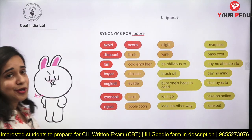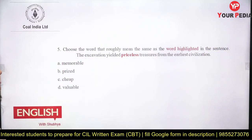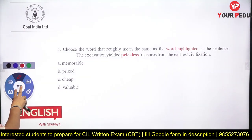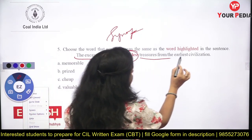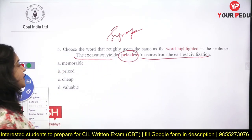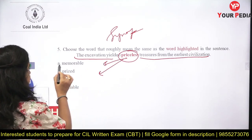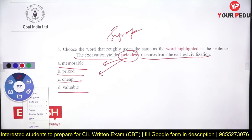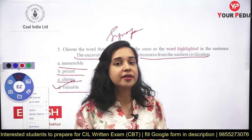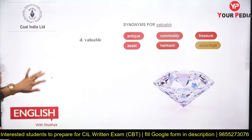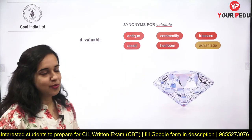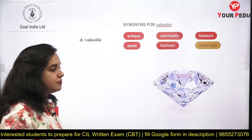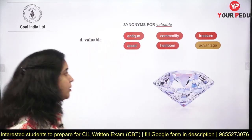The fifth question is another synonym question. The sentence is: 'The expression yielded priceless prayers from the earliest civilization.' What is the same meaning of 'priceless'? Options: memorable, priced, cheap, or valuable. The answer is valuable — something you value a lot. Synonyms of valuable include: antique, commodity, asset, heirloom, and advantage.